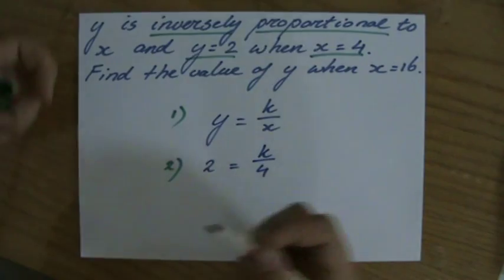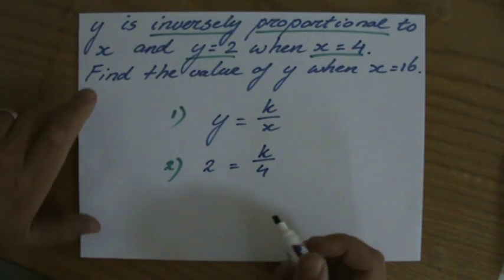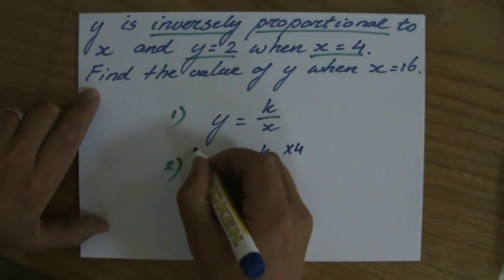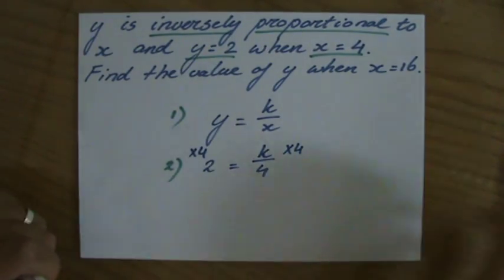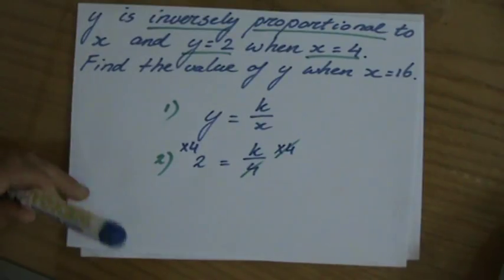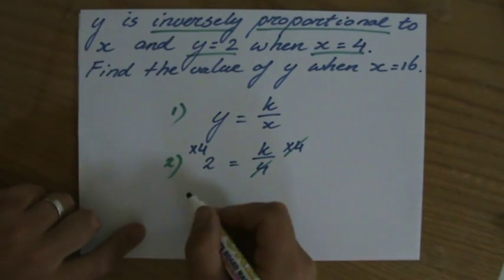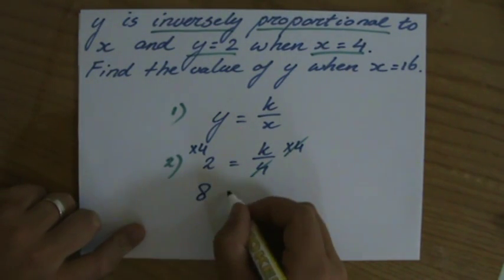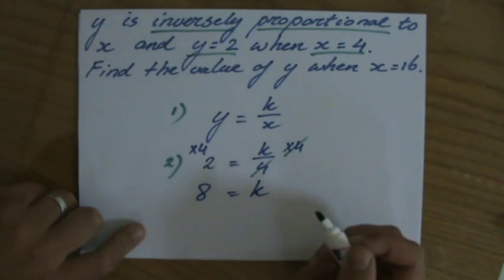Now, rearranging this formula, isolating k, I multiply both sides by 4, because by doing so I am getting rid of that denominator. So 4 times 2, 8 equals k.